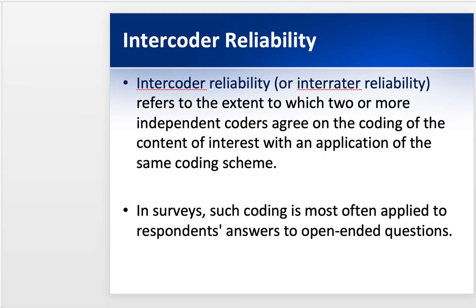So intercoder reliability — otherwise known as interrater reliability — refers to the extent they agree. When you're reporting on it in a paper, you might say these two graders agreed 90% of the time, or they agreed 80% of the time. This way you know how reliable it is — did they disagree a lot, or did they have a lot of agreement?